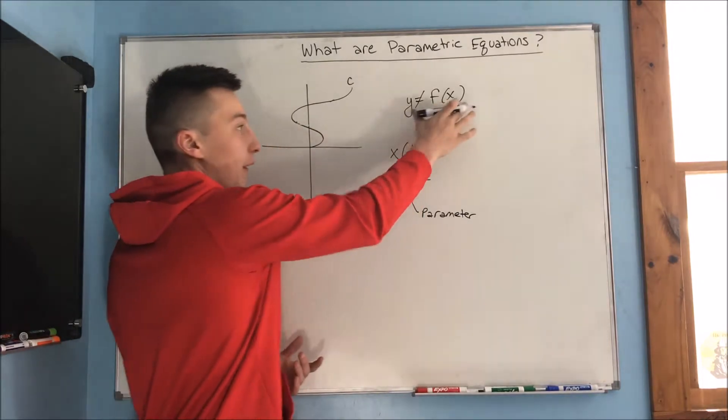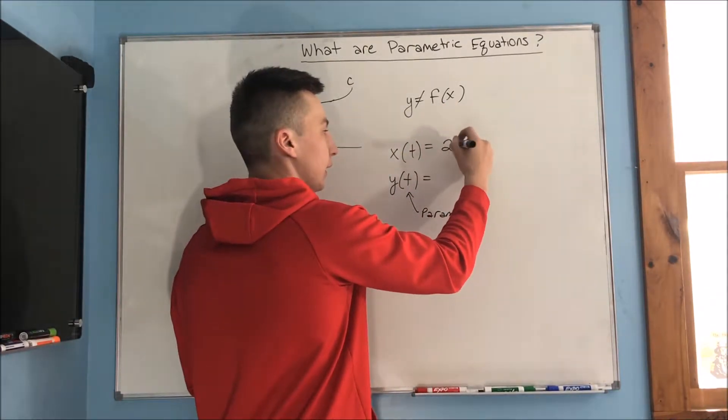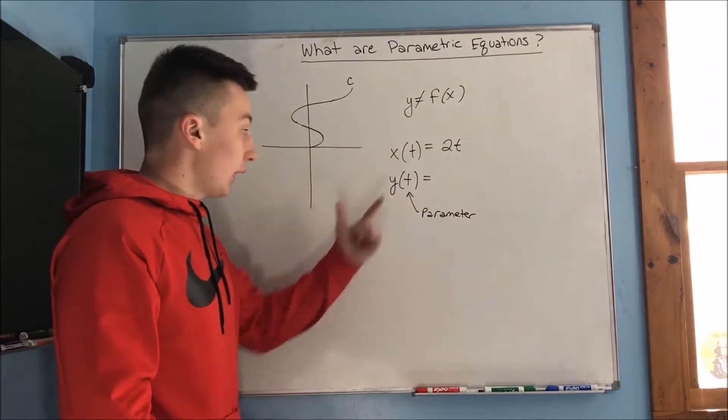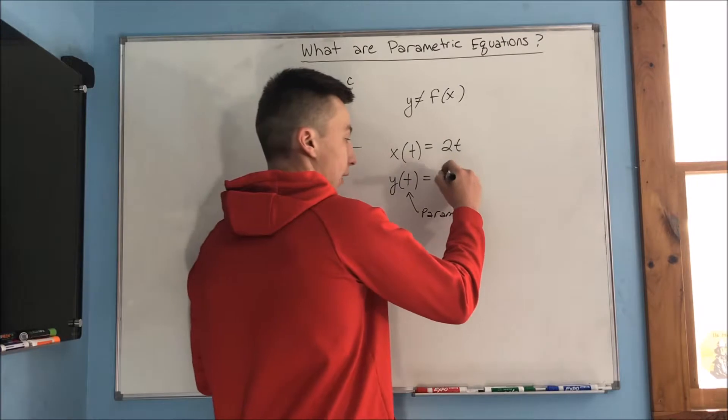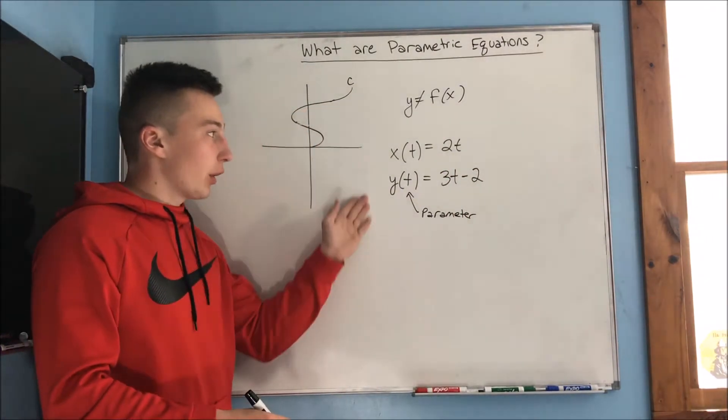And just as y would be a function of x, if x is a function of t, we would have something like 2t in here. It's going to be a function with t in it, and here we'd have, let's say, 3t minus 2. So those are our parametric equations.